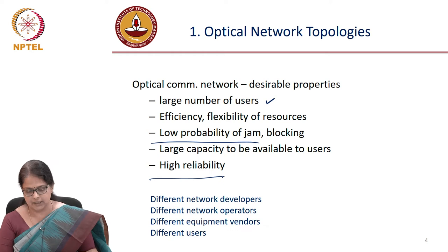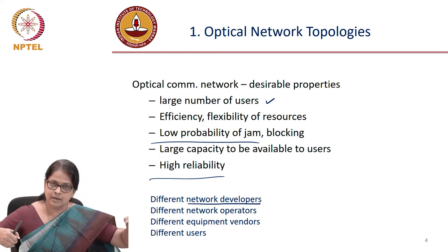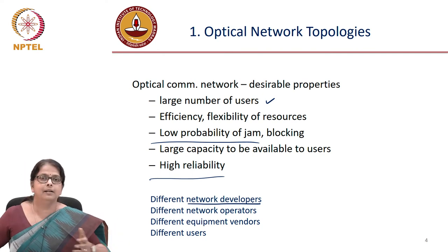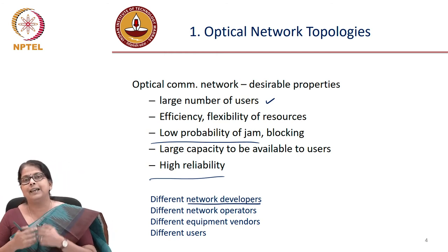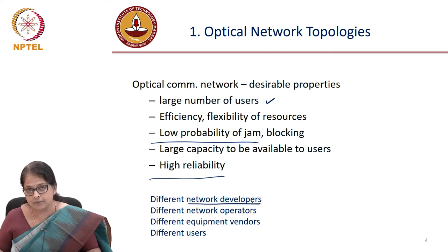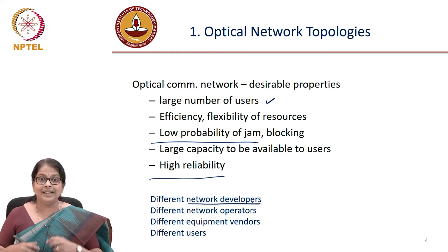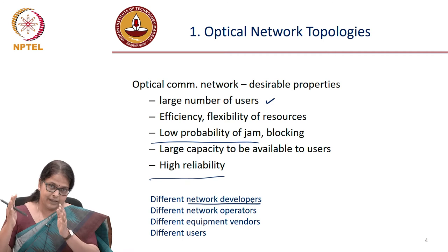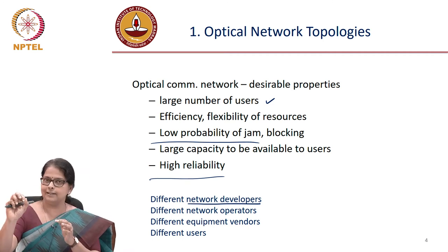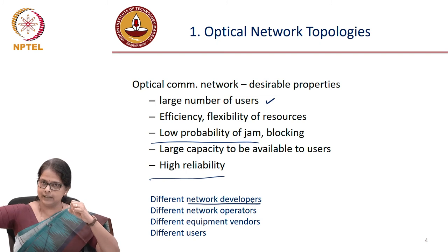An additional complication is that people developing these networks — physically laying fiber optic cable or designing submarine networks — are a set of companies. There are only three or four companies capable of laying and maintaining a submarine network. Terrestrial networks involve multiple people. The network operators are different from those who lay the network. Once the network is laid, it is leased out to network operators, who get only a part of the bandwidth offered by the same physical fiber. Multiple network operators could actually be using the same physical fiber.